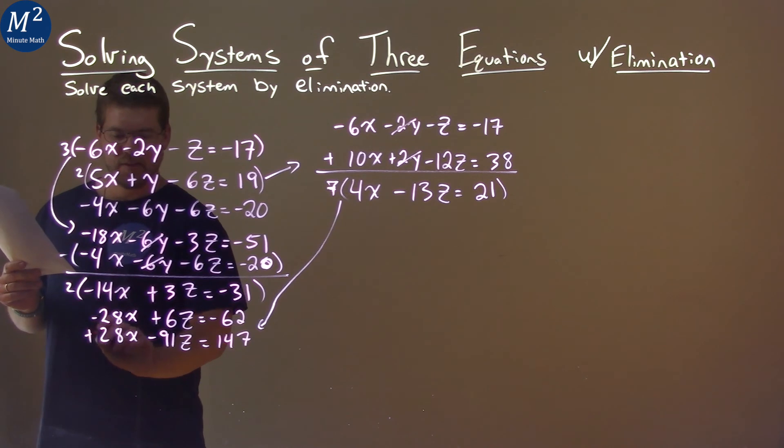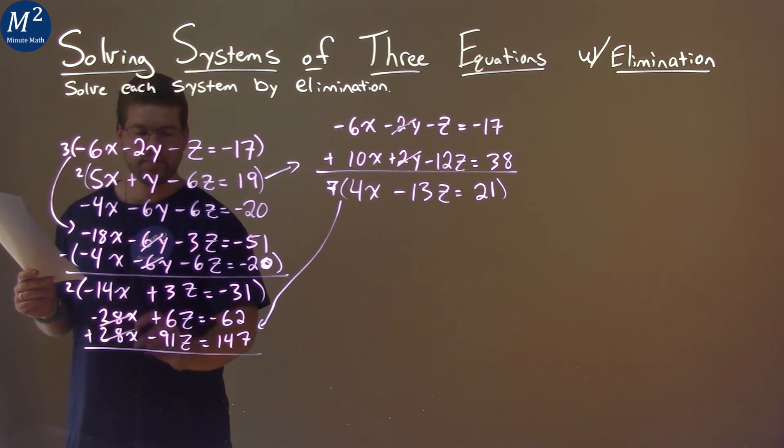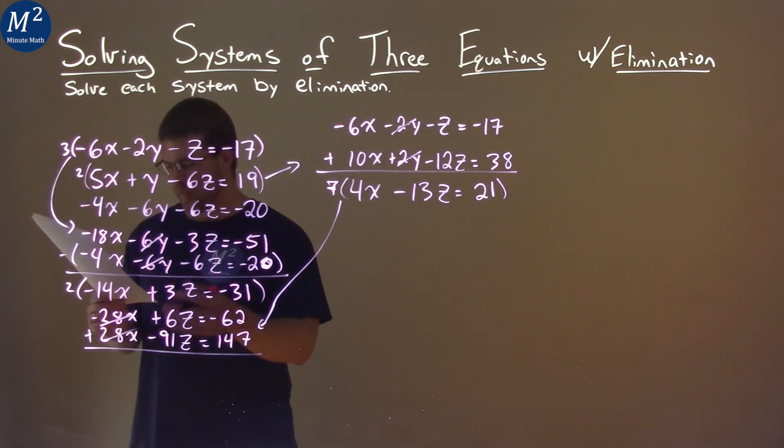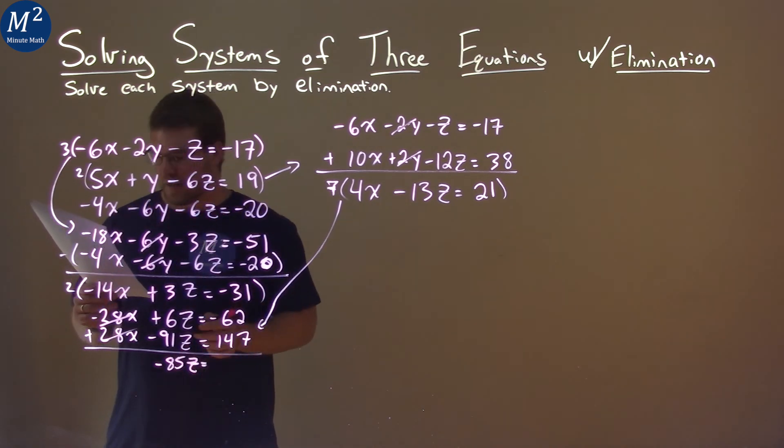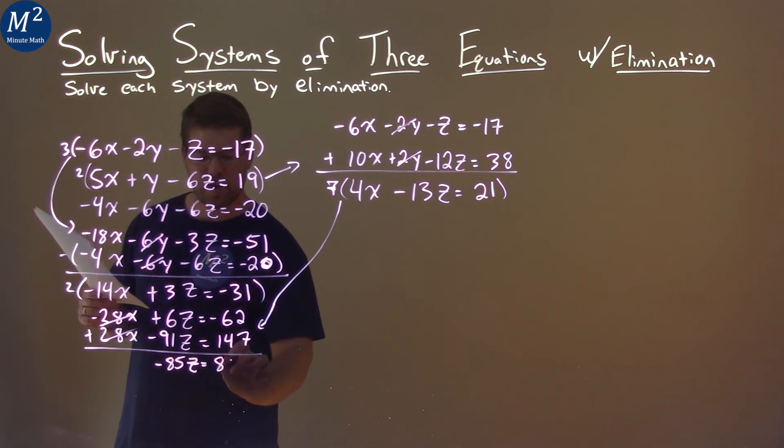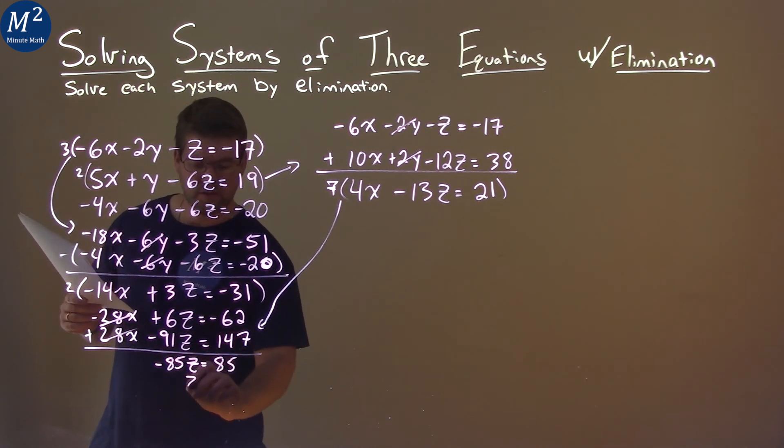I now can add these two equations together and the x's eliminate. Negative 28x plus 28x is 0. 6z plus negative 91z is negative 85z. Negative 62 plus 147 is 85. Divide both sides by negative 85, and z equals negative 1.